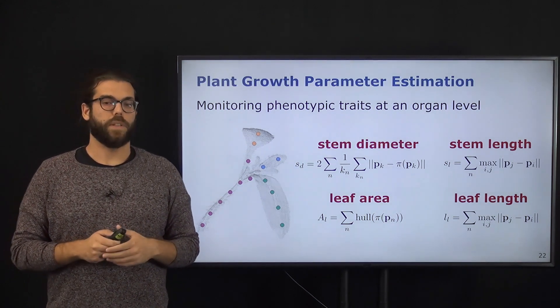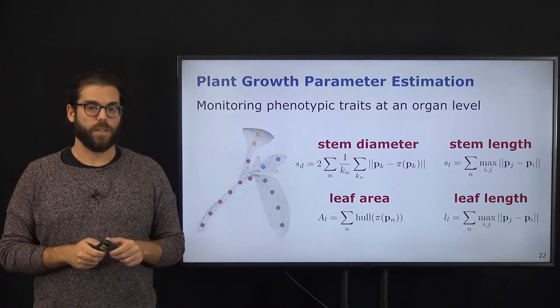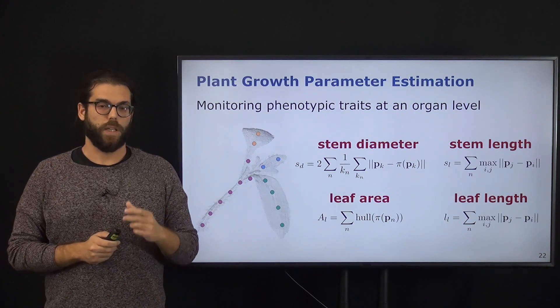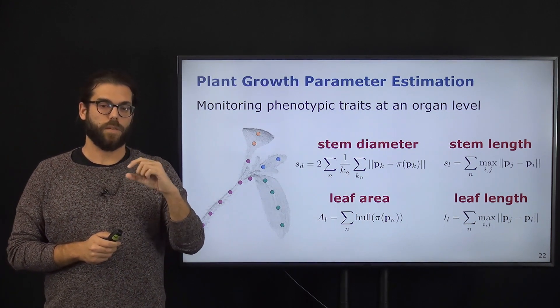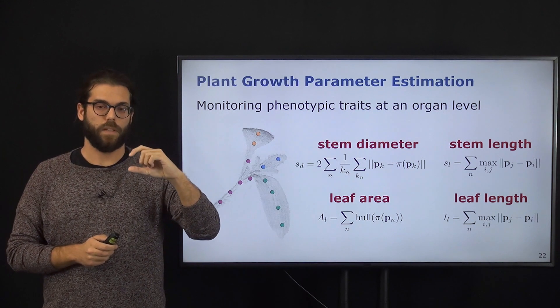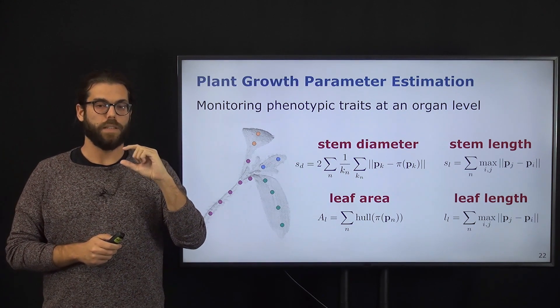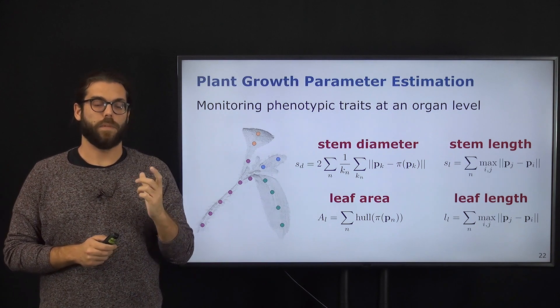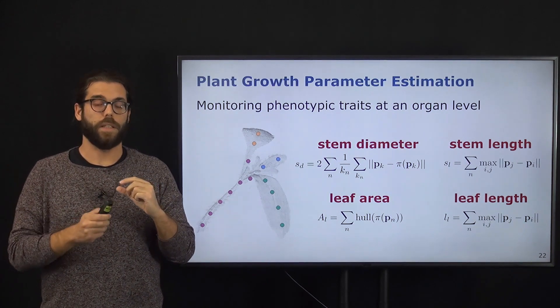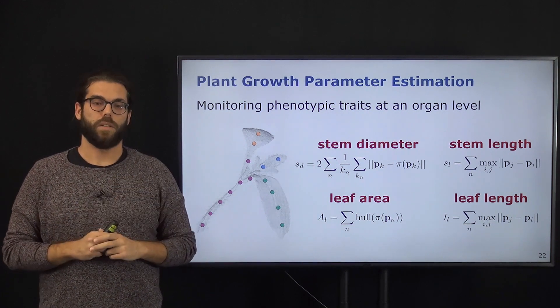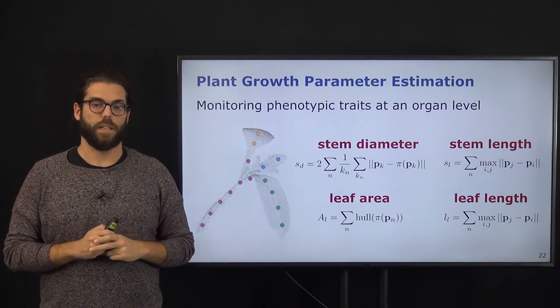So how do we compute the stem diameter? We consider each point in the skeleton that was classified as stem, and then we consider each segment of the stem and compute the main axis of that part of the stem. Given this main axis, we find the mean distance between each point in the point cloud that was associated to that node in the skeleton.